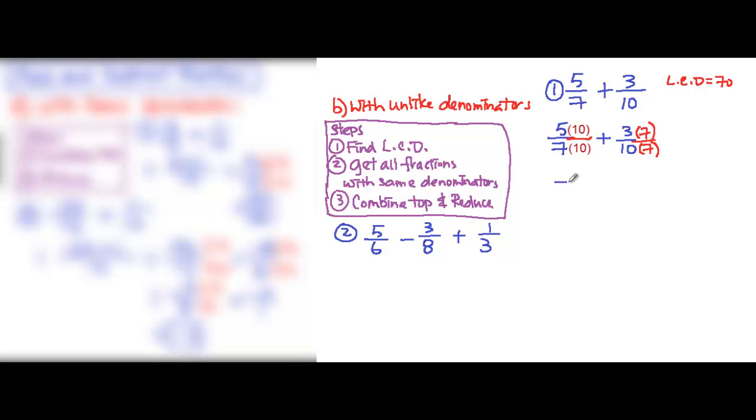After you do that, the first fraction will become the bottom part you have 70, and the top part you have 50. For the next fraction, the bottom part 10×7 is 70, and the top part is 3×7, which is 21.